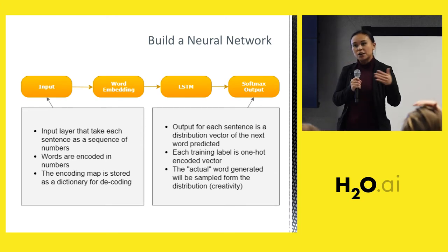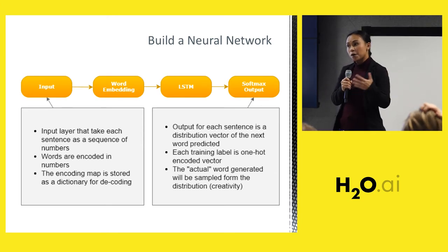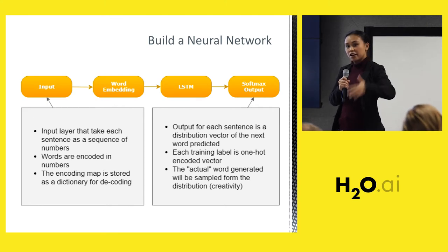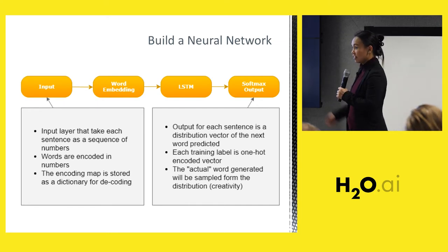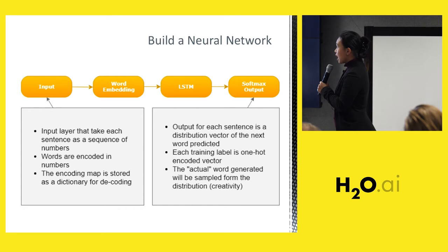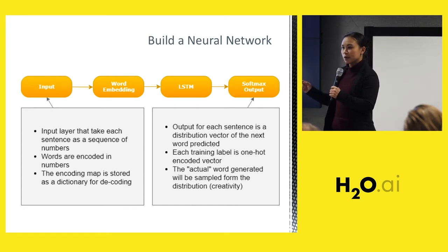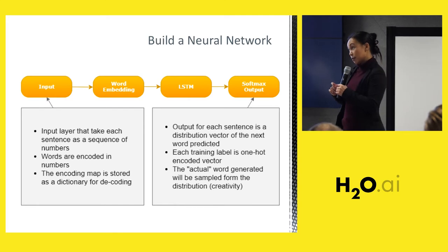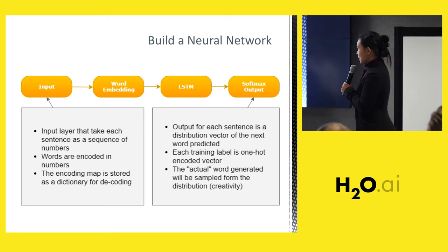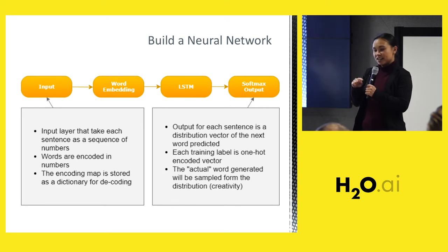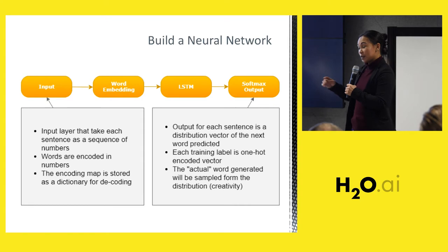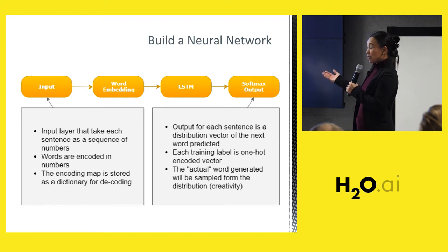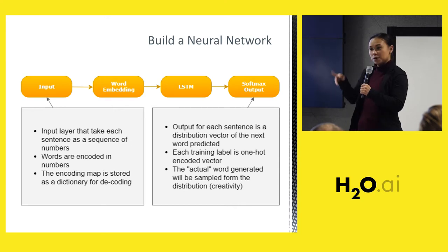The input is a bunch of words — we call that a corpus — basically just a long article of words. The first thing we have to do is make it into usable data that the neural network understands. I encode them with numbers so each unique word is represented by a unique number. At the end when we get the result we want to decode it back, so I need to save the dictionary for decoding later.